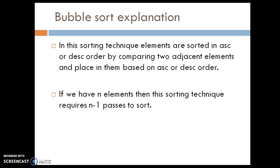If we have n elements, this sorting technique requires n minus 1 passes to sort. For example, if you have 5 elements, the sorting technique requires 4 passes. If we have 3 elements, we require 2 passes. A pass is nothing but an iteration.